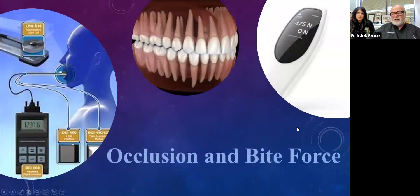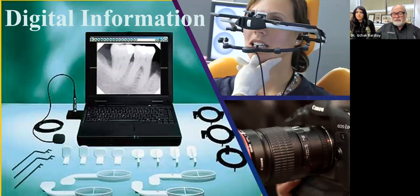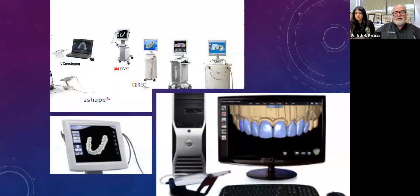Let's look at occlusion and bite force in relation to digital information collection. There are many ways to collect information when we first meet patients. We're all familiar with digital photography and digital radiography, which has made a huge difference in clinical practice. We can extend digital capture to jaw records and jaw movements, and use different scanners to scan in different ways.